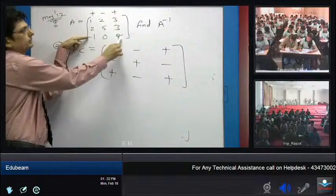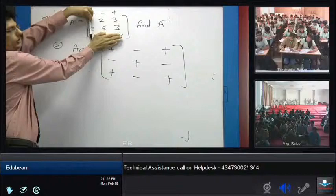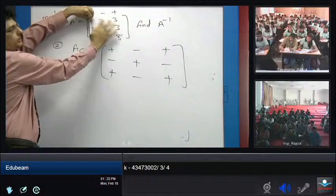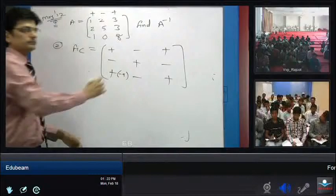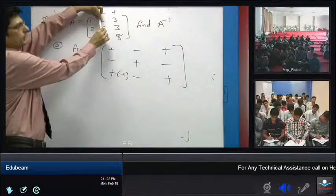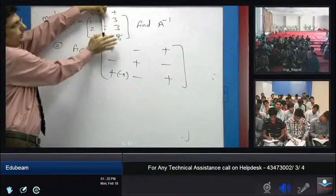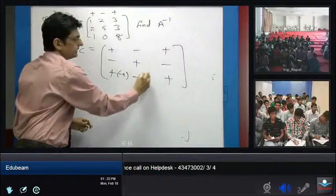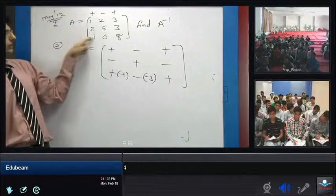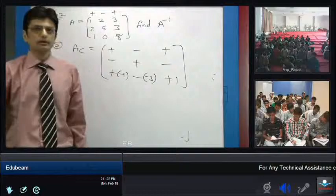For the co-factor of element 1: cancel its row and column, the answer is 6 minus 15, which is minus 9. For the co-factor of element 0: cancel its row and column, the answer is 3 minus 6, which is minus 3. For element 8: cancel its row and column, the answer is 5 minus 4, which is 1.